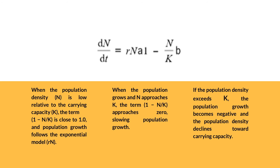When the population density N is low relative to the carrying capacity K, the term 1 minus N over K is close to 1.0, and the population growth follows the exponential model, R times N, or the per capita growth rate times the population density. However, as the population grows and N approaches the carrying capacity K, the term 1 minus N over K approaches 0, slowing the population growth. Should the population density exceed K, the population growth becomes negative and the population density declines towards the carrying capacity.